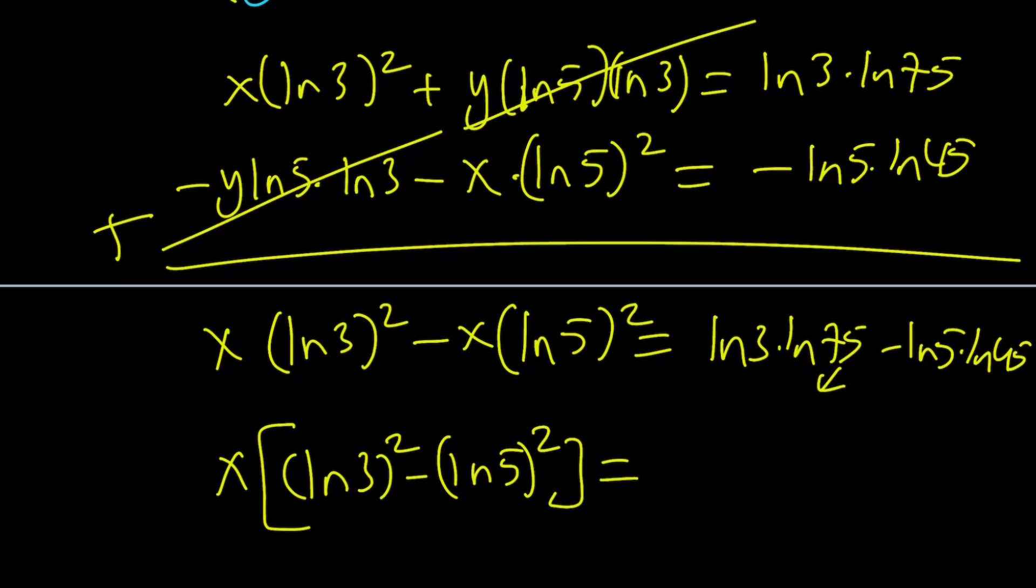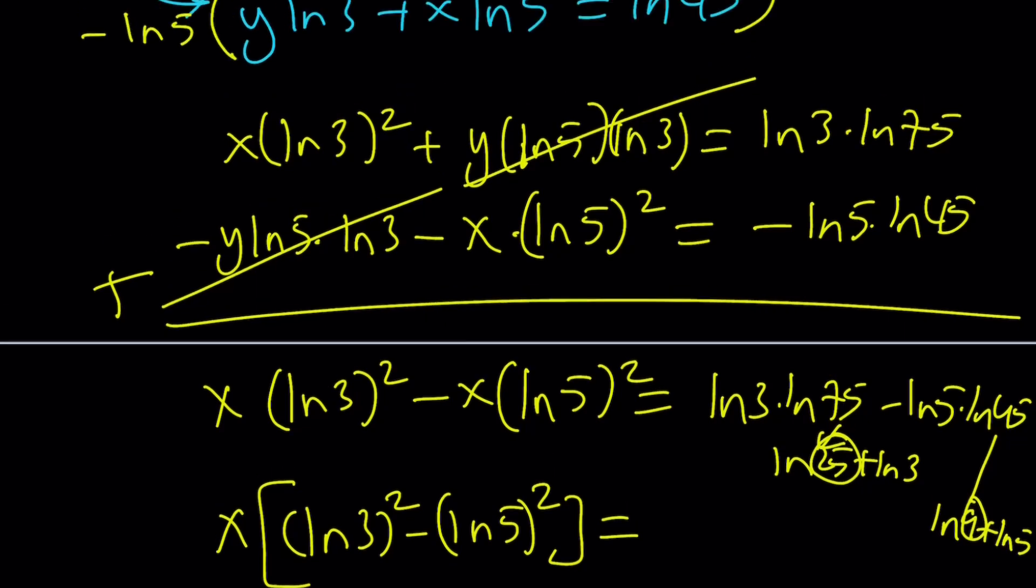But you need to break this down into ln 25 plus ln 3. And this one is going to be ln 9 plus ln 5. And then this will be 5 squared, this will be 3 squared. So on and so forth. And that should give you the same answer.